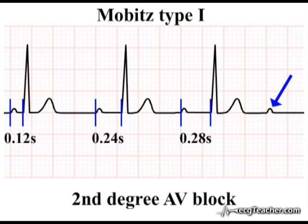The phenomenon is usually caused by increasing prolongation of the conduction time within the AV node. Mobitz type 1 second degree AV block may occasionally be associated with symptoms, but is considered clinically benign in the sense that it has a low rate of progression to complete AV block.